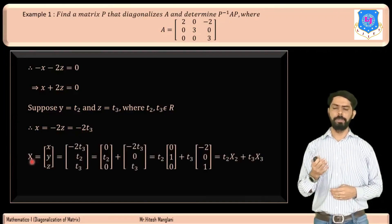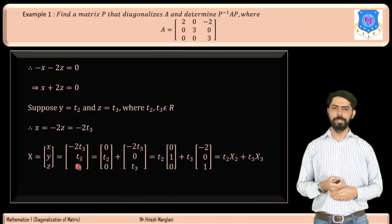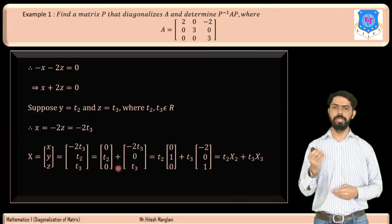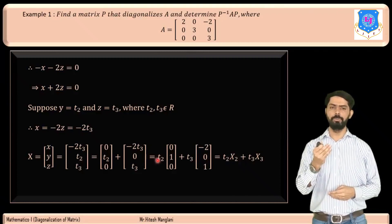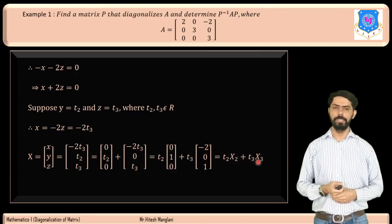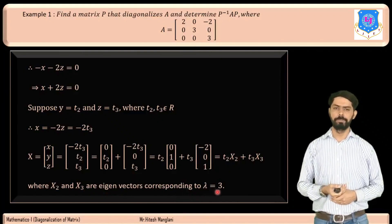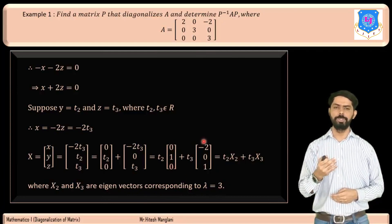The eigenvector X = [x, y, z]ᵀ = [−2t₃, t₂, t₃]ᵀ = t₂[0, 1, 0]ᵀ + t₃[−2, 0, 1]ᵀ = t₂X₂ + t₃X₃. Therefore the eigenvectors for λ = 3 are X₂ = [0, 1, 0]ᵀ and X₃ = [−2, 0, 1]ᵀ.